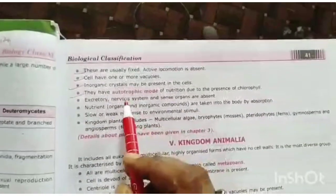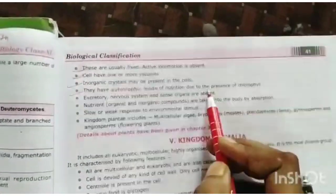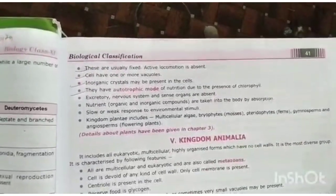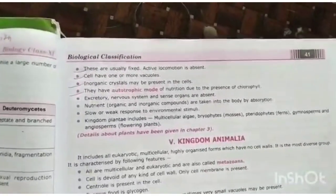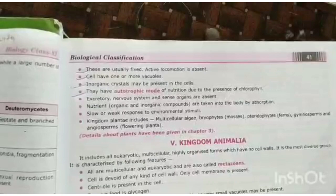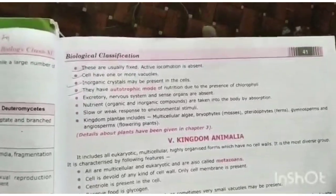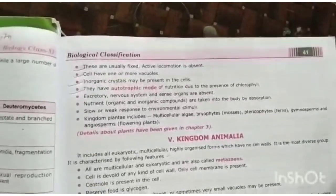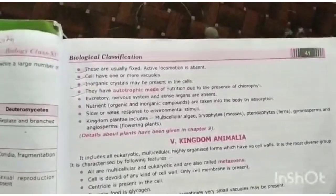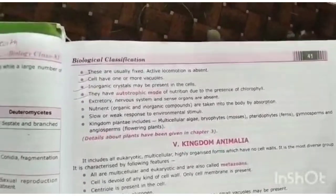They have an autotrophic mode of nutrition due to the presence of chlorophyll. Because they have chlorophyll, they show autotrophic nutrition. They make their food with the help of light, and this process is called photosynthesis.